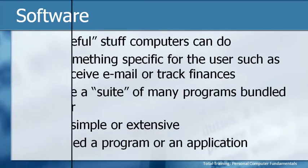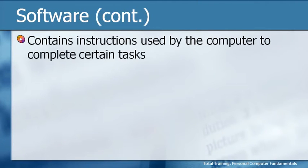What makes software work is that it contains programming in the background. There are instructions used by the computer to complete certain tasks. For example, if you want to send an email, you need something that understands what you're typing, converts that information, sends it across the network to the recipient, and has it appear to them as the same words and sentences you typed. That's really phenomenal — by pressing a button in just a few seconds, you can send a message around the world.